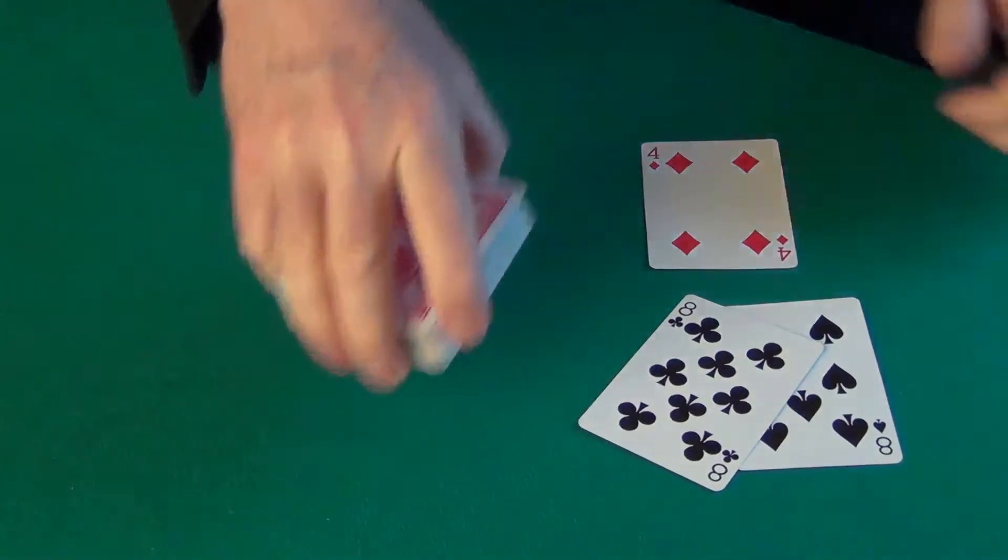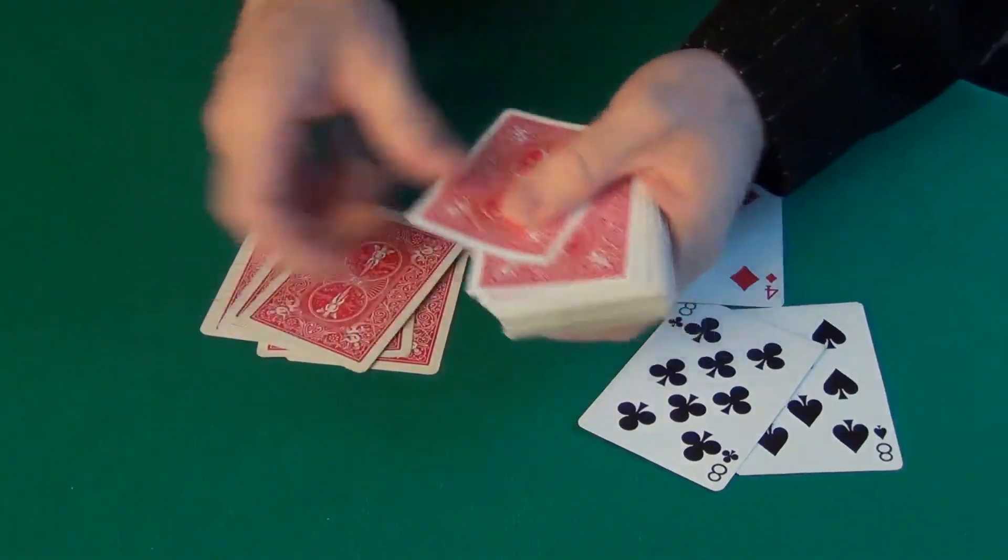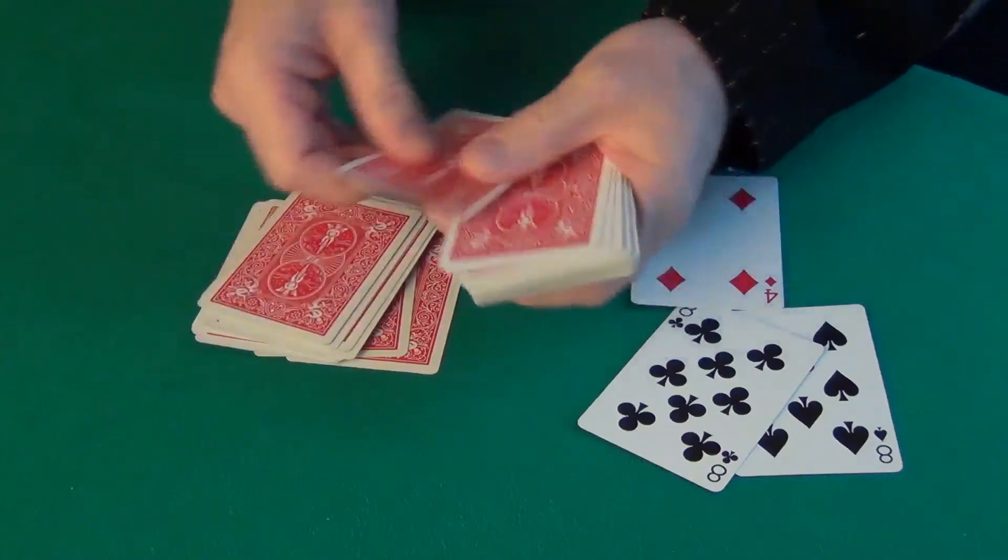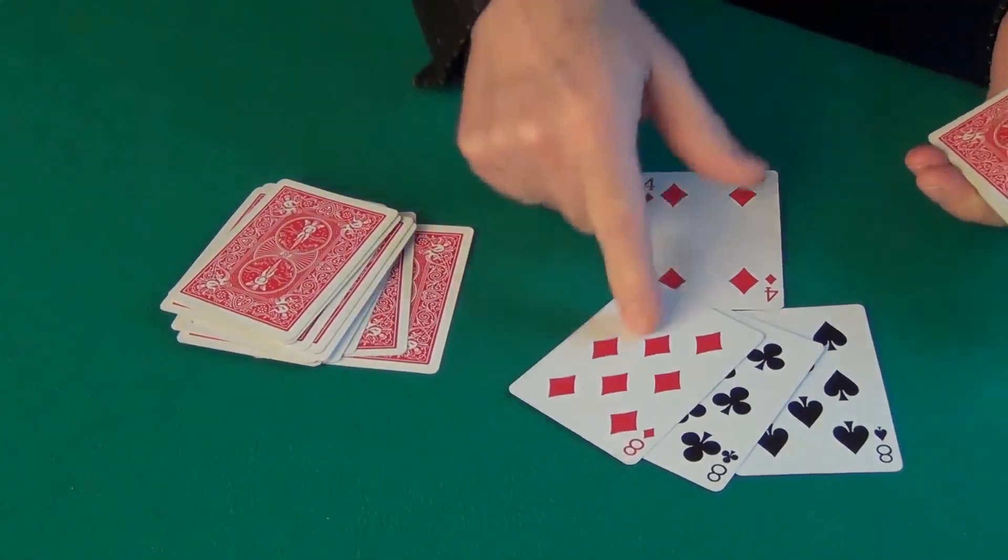Can you please take the cards and count down 20 cards? 1, 2, 3, 4, 5, 6, 7, 8, 9, 10, 11, 12, 13, 14, 15, 16, 17, 18, 19, 20. We get the Eight of Diamonds.